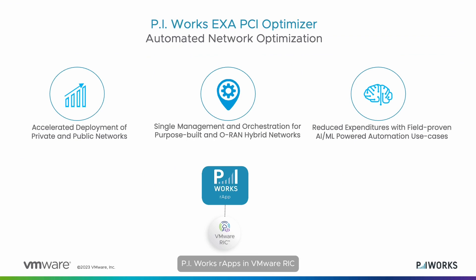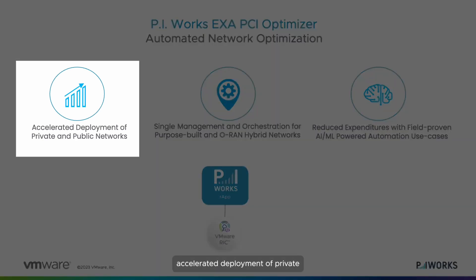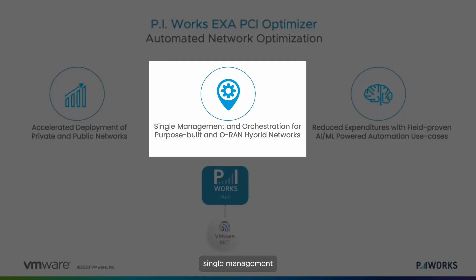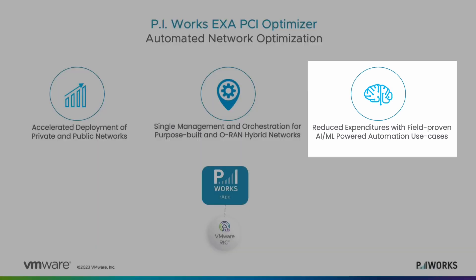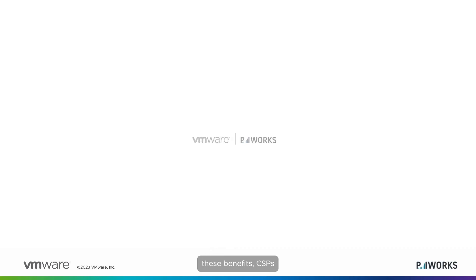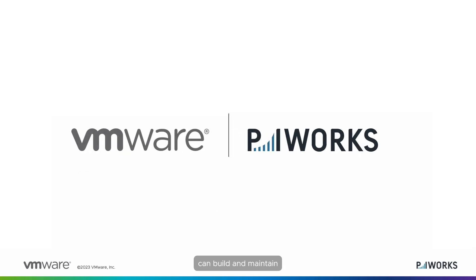PI Works R-Apps and VMware RIC provide a comprehensive approach to network management with three key benefits: accelerated deployment of private and public networks; single management and orchestration for purpose-built and O-RAN hybrid networks; and reduced expenditures with field-proven AIML-powered automation use cases. By leveraging these benefits, CSPs can build and maintain a high-performing network while reducing cost and complexity.